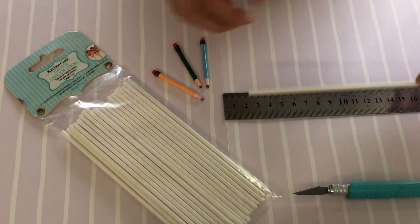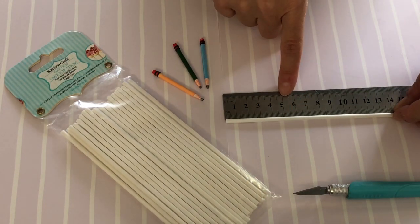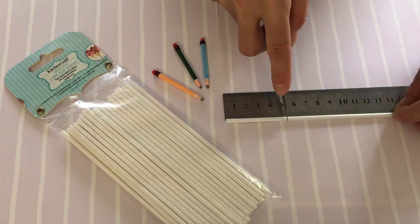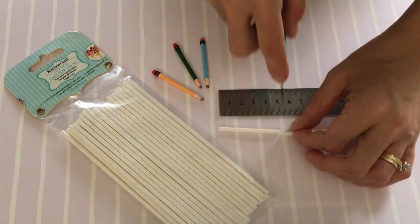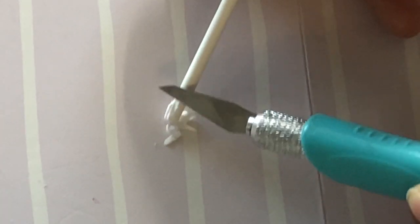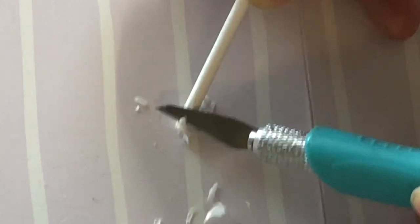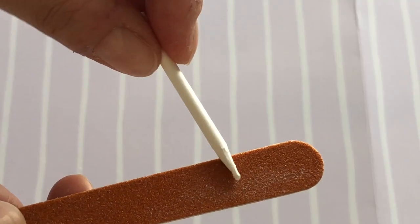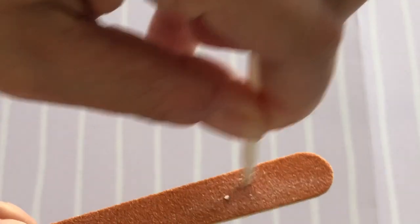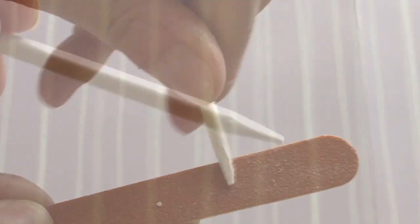For the pencils take a cake pop stick and cut it down to be 5cm long. With an X-Acto blade carefully shave the tip to give it a pointed look. This doesn't have to be perfect as we can sand the tip smooth with a nail file.